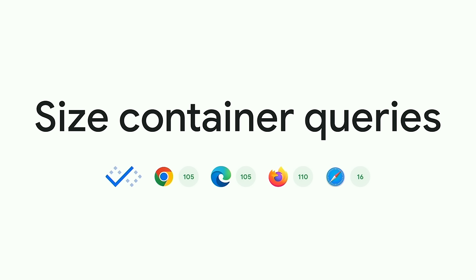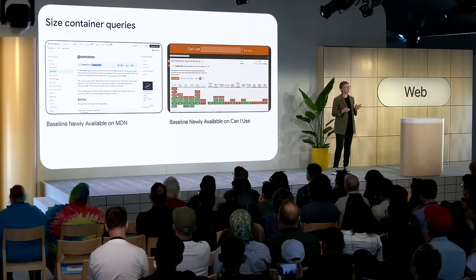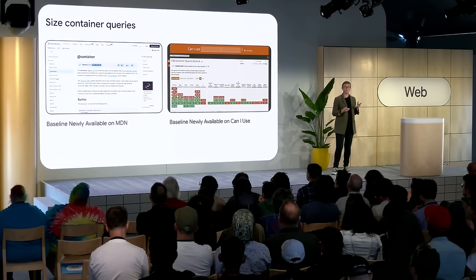Size container queries became interoperable and part of Baseline newly available in February 2023. You can see their status on MDN and Can I Use along with the browser versions that support them, giving you the information you need if you want to know if you can start to use them. Container queries will become widely available in August 2025, at which point most developers can consider this feature available to use without needing to consider that there might be people without support.